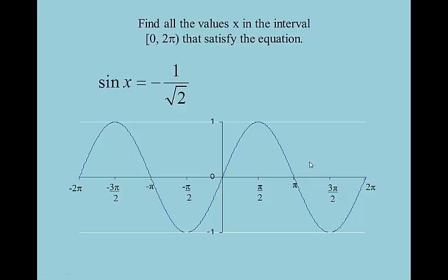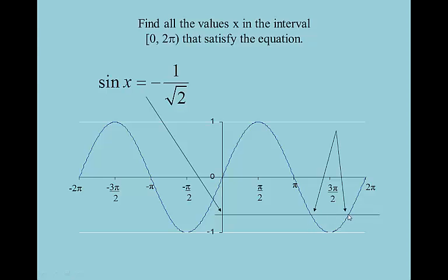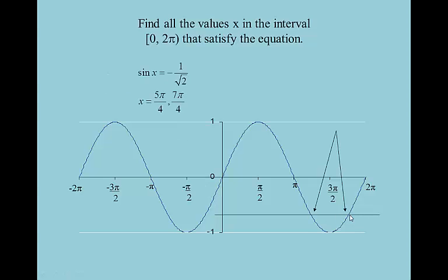Sine x = negative 1/√2. You should be thinking 45-degree angles, because the sine of 45 degrees is 1/√2. And since it's negative, we want the 45-degree angle in quadrants 3 and 4 — those are the two quadrants in which sine is negative. The 45-degree angle in quadrant 3 is 5π/4, and the 45-degree angle in quadrant 4 is 7π/4. So our answers are 5π/4 and 7π/4.